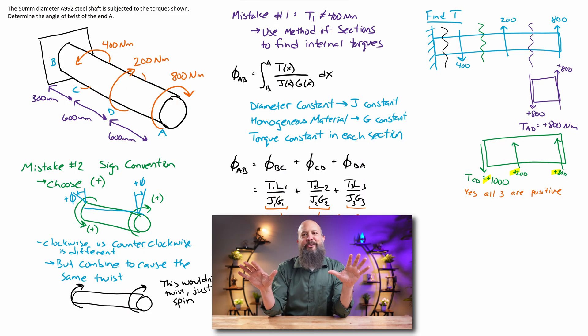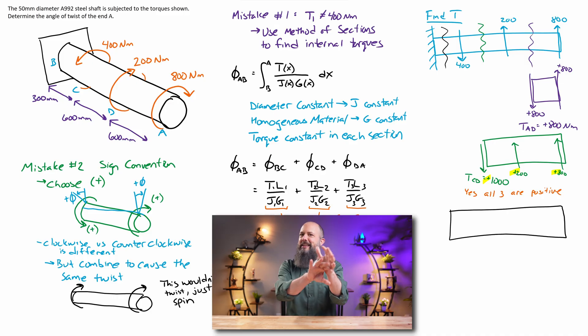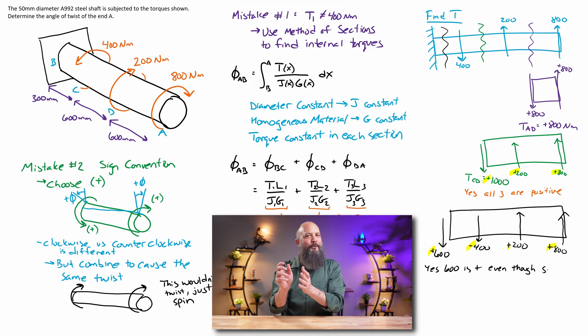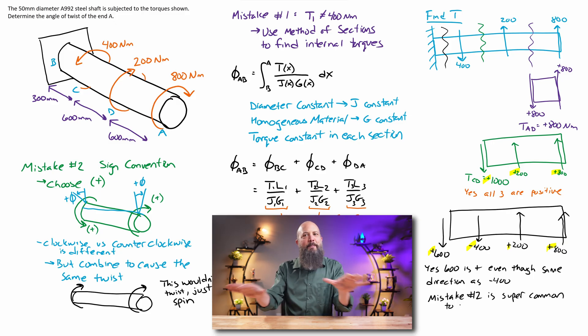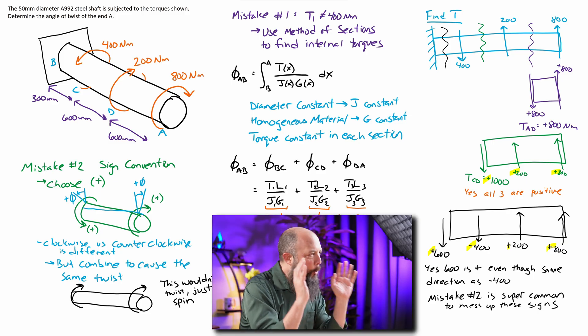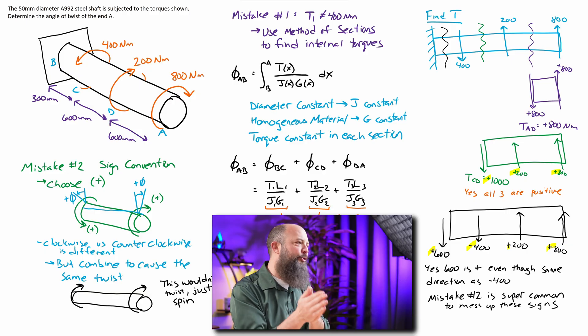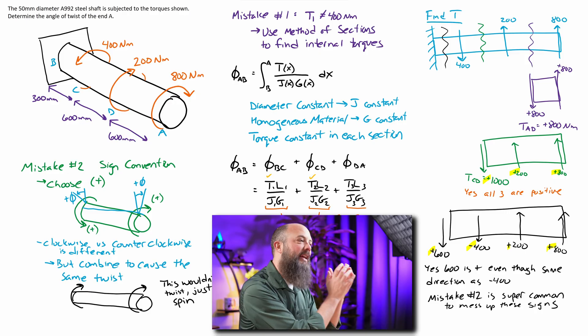And the one that's totally crazy is if we look at the entire beam just about, like cut it off just before the wall, 800 plus 200 minus 400 is 600. So, we've got a torque of 600 newton meters through section BC, which seems crazy that the 600 is pointing the same direction as the 400, but it has an opposite sign. Again, this is something students get wrong all the time. Your internal torque is oppositely signed as the externally applied torques.